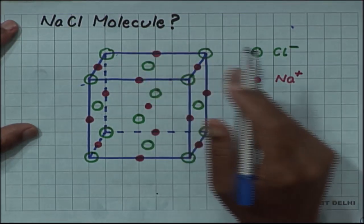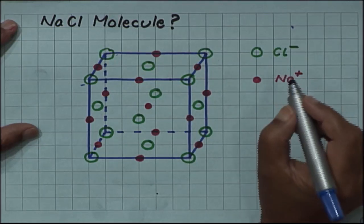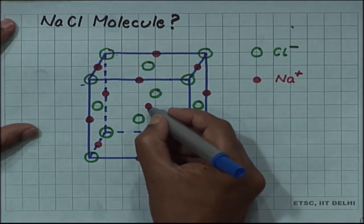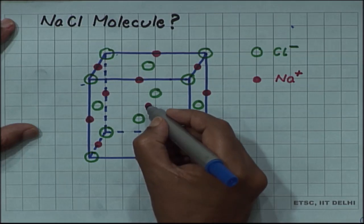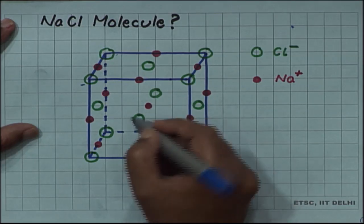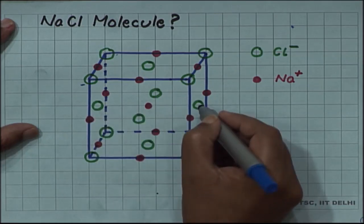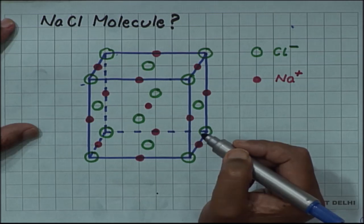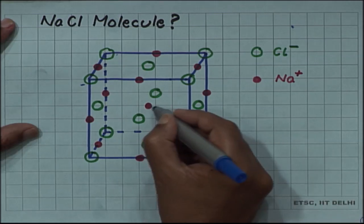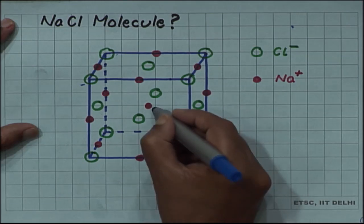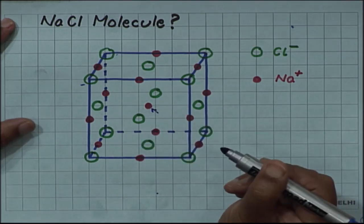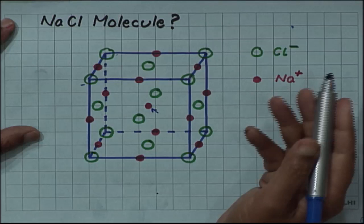Now, in this structure each sodium is nearest to 6 chlorine ions. For example, the 6 chloride ions which are nearest to the central sodium — the one sitting in the body-centered position.